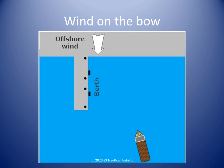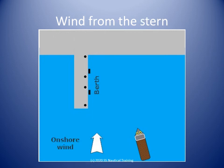In this diagram, the helmsman has to maneuver the boat with a wind from her stern, pushing her boat onto her berth. This is not so straightforward. The boat is being pushed onto the berth. If the wind is very strong or the approach speed is not right, the boat can be pushed onto the berth too quickly and cause damage.